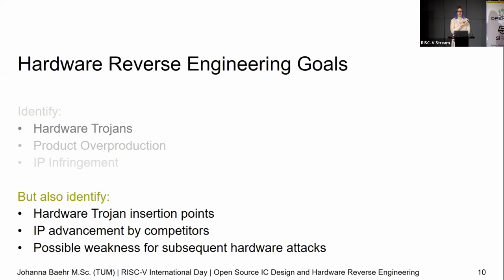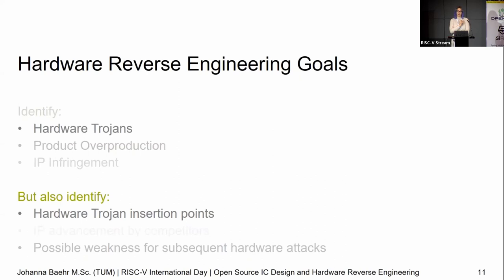Reverse engineering is also used to figure out where to place a hardware Trojan — it's very difficult to figure out the right area without knowing the functionality. We can also look into IP advancement and identify weaknesses for subsequent hardware attacks — figuring out where the widgets are that you might want to attack in a fault attack, or how to side channel attack. In an open source scenario, we don't care so much about IP advancement. The RTL you can just download from GitHub or GitLab. What does become interesting is how the attacker uses this to insert hardware Trojans.